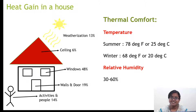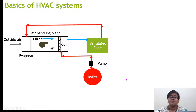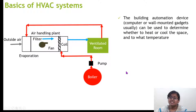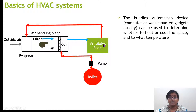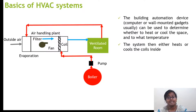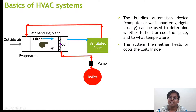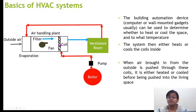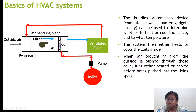Now let us understand the basics of HVAC system. A building automation device can be used to determine whether to heat or cool the space and to what temperature. It will sense if it is hot or cold and work accordingly. The system then either heats or cools the coils inside. If you feel hot, the coil will provide a cold environment through the cooling process; if you feel very cold, it will provide a warm temperature.